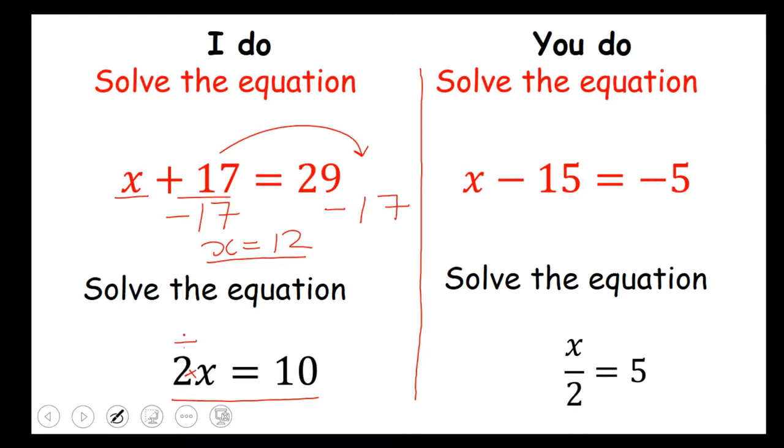So you divide this side by 2, and you also divide this side by 2. And the answer that you should get is x equals 5. Now if you substitute that 5 back into the equation, 2 times 5 gives us 10.